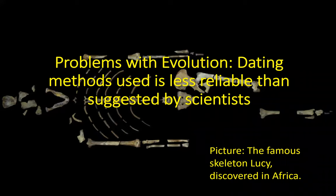One of the problems with evolution is that the dating methods that are used are less reliable than suggested by scientists. Dating methods for determining the age of the earth are extremely unreliable and often use suspect means for measurement. Much of the dating techniques are circular and based upon the already determined date of the fossil record strata. Additionally, the amounts under scrutiny for such dating techniques are very small, and only minuscule variations can change the results by literally millions of years.